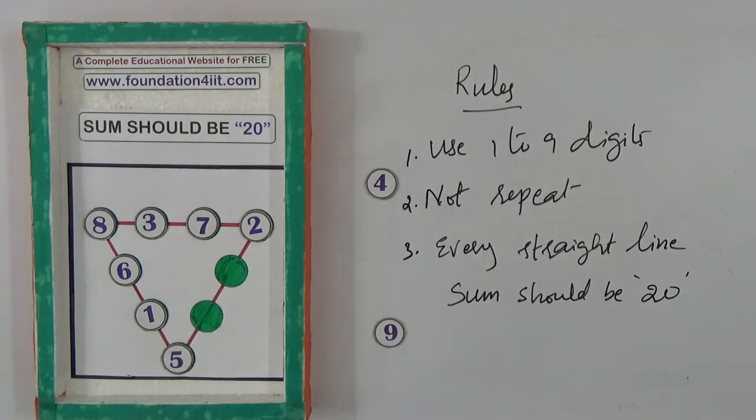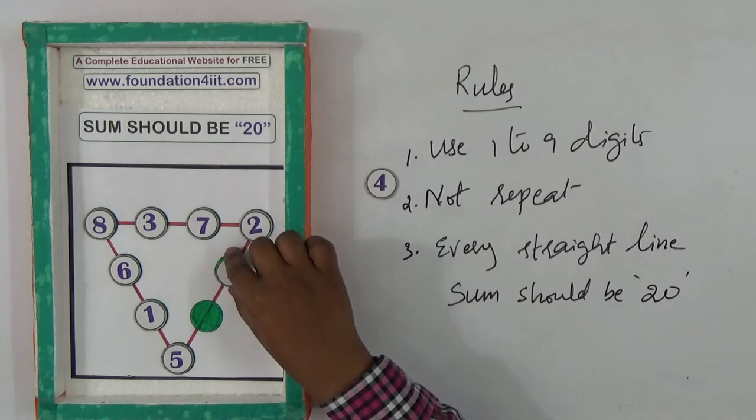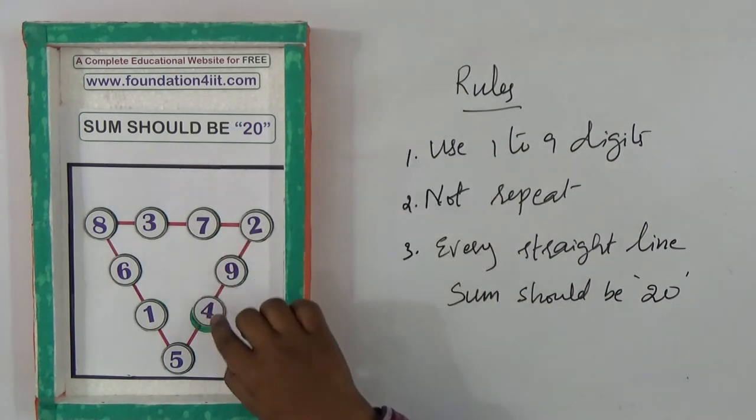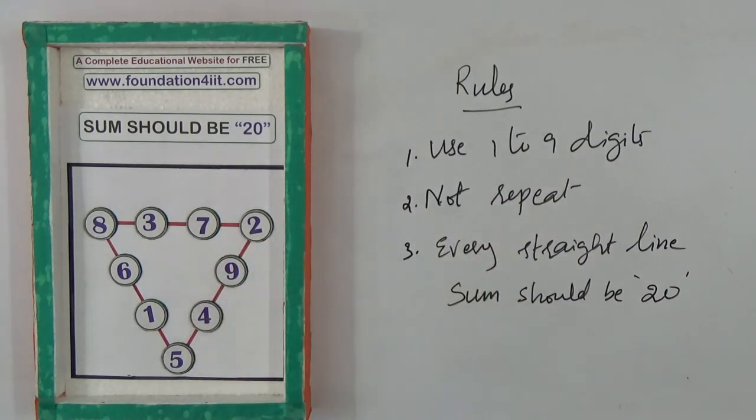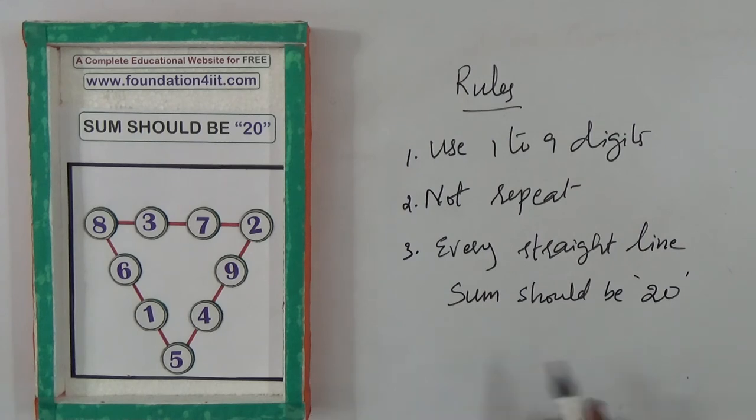Eight, six, one, five equals 20. The other two numbers, nine and four, can adjust here. I'm placing nine and four. Five plus four is nine, plus nine is eighteen, plus two is 20.